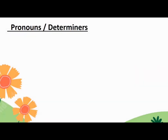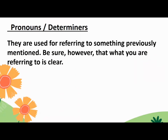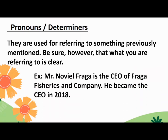The third type is pronouns or determiners. They are used for referring to something previously mentioned. Be sure, however, that what you are referring to is clear. Example: Mr. Novial Fraga is the CEO of Fraga Fisheries and Company. He became the CEO in 2018.